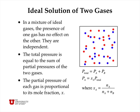Let's begin by considering an ideal solution of two gases. In a mixture of ideal gases, the presence of one gas has no effect on the other. They're mostly independent because most of the time gas molecules are just flying through free space and only every once in a while collide with another molecule and bounce off and go in another direction.